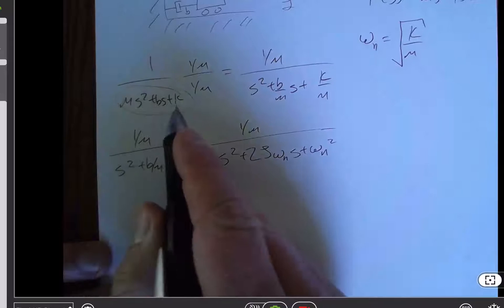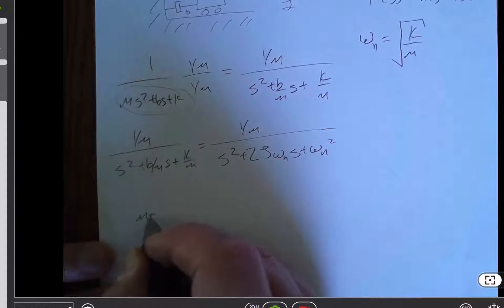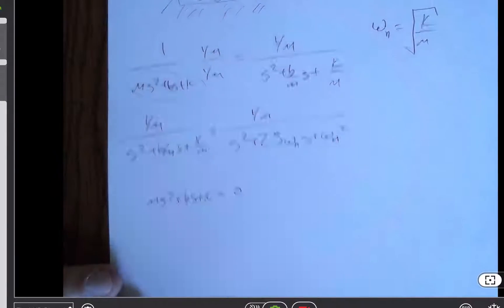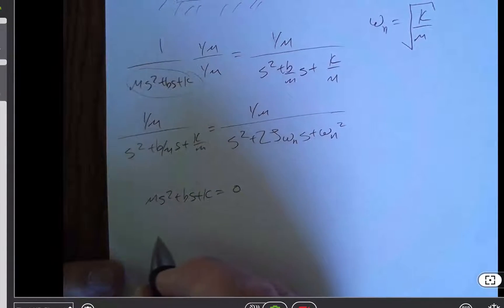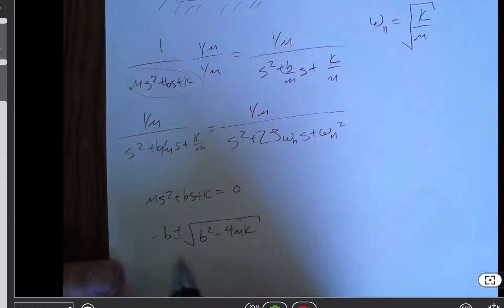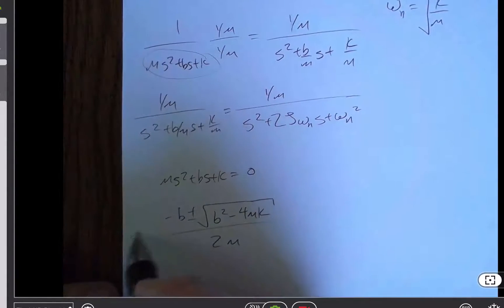And so if I take ms squared plus bs plus k and set it equal to 0, the poles are the values of s that make that true. And so we're going to go to the quadratic formula, we're going to go with negative b plus or minus the square root of b squared minus 4ac over 2a. Hopefully you remember that from high school. So those are the s of our poles.